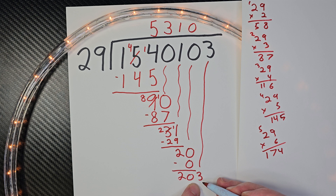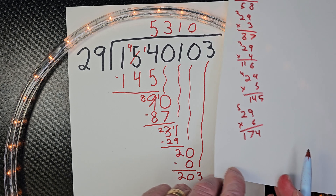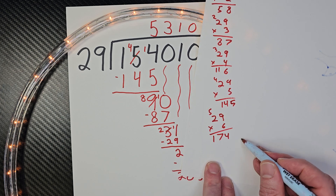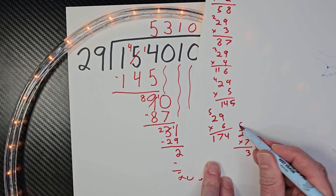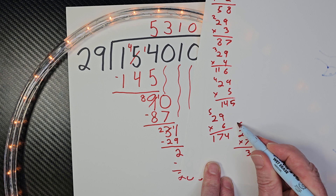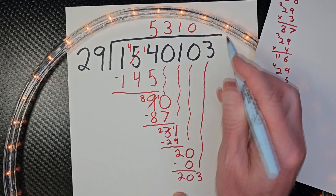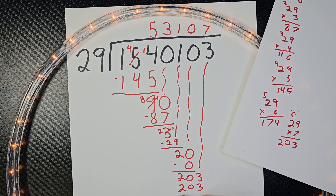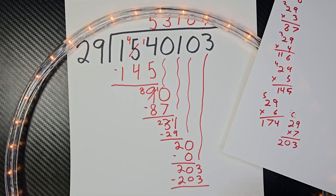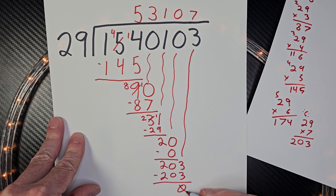And now I have 203. I can put 29 into 203 — do you know how many times? It's not 6, it's a bigger number. So I'm going to try 7. 29 times 7: 9 times 7 is 63, carry the 2, and then 7 times 2 is 14, plus 2 is... 203. Bingo, it matched! So I'm going to put my 7 up here. 7 times 29 equals 203. Subtract that, and we have a remainder of 0. There you go.